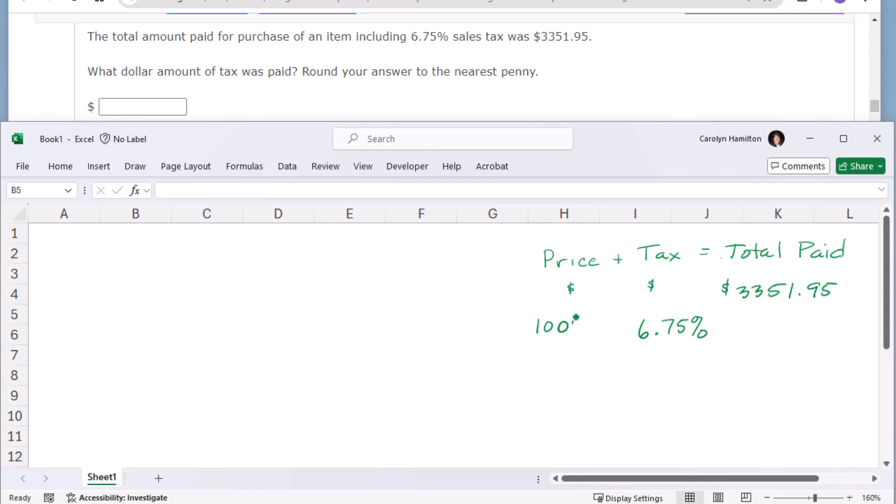But I do know that the original price in percent would be 100%. So 100% of the price plus 6.75% more would give 106.75% of the total. So these two correlate, so I could set up based on that.